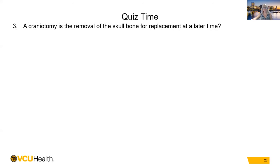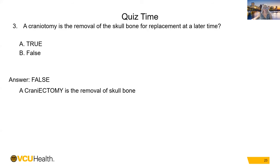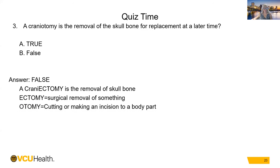Question 3 — A craniotomy is the removal of the skull bone for replacement at a later time. True or false? The answer is false. A craniotomy means an otomy — cutting or making an incision — versus a craniectomy which is an ectomy, meaning removal of something. A craniotomy is a surgical incision into the skull, such as burr holes.